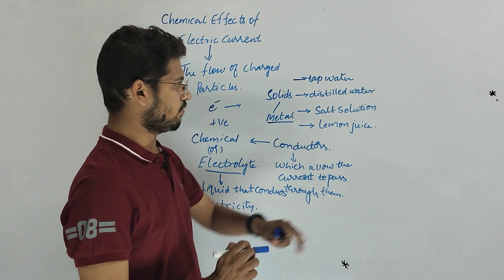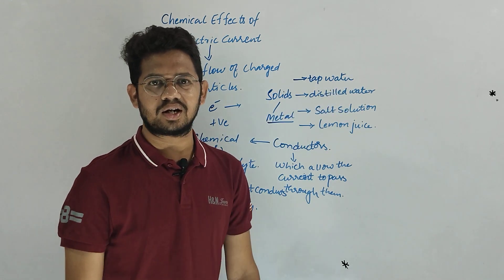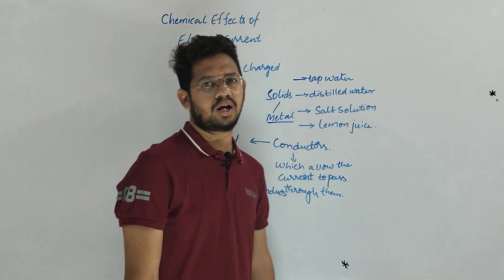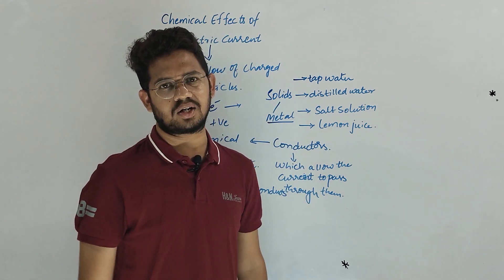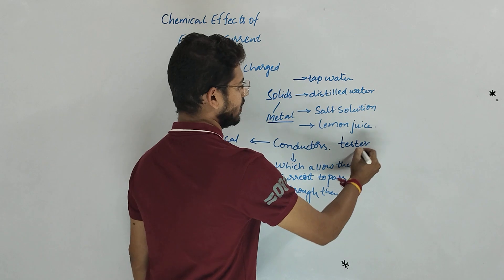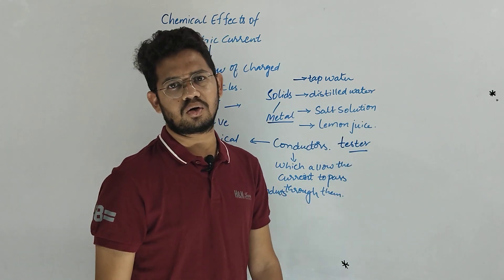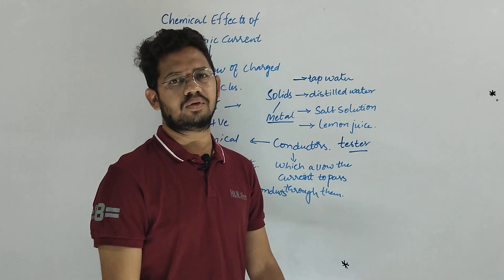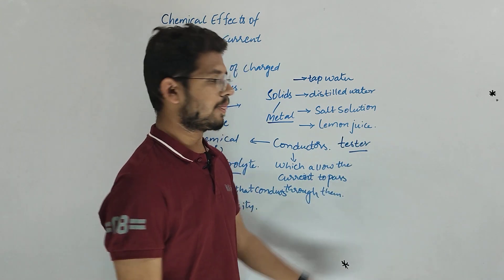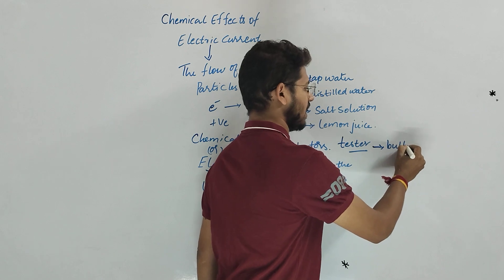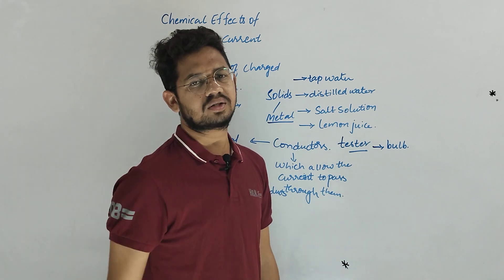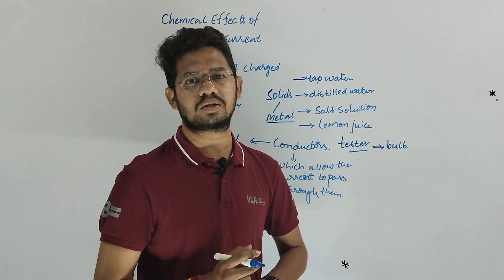Now let us see whether these liquids are good conductors of electricity or not. To do this activity, we take a tester and first check if it is working. To test whether current is flowing, we need a tester fitted with a bulb or indicator at its end. If the tester's indicator is working, that tells us electricity is passing through that circuit.